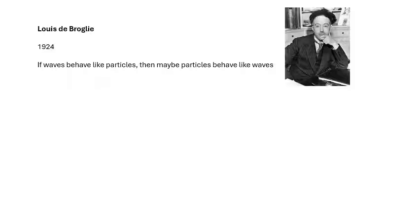It had been suggested that waves had particle-like properties, which was what the photoelectric effect was—how Einstein explained it. So Louis de Broglie suggested that particles, for example electrons, may have wave-like properties, and that would explain a couple of things.